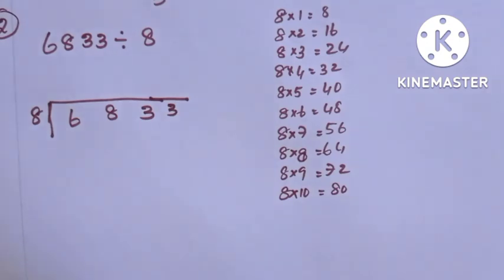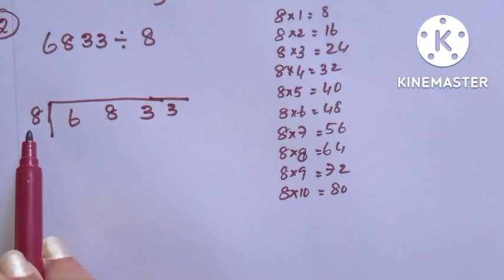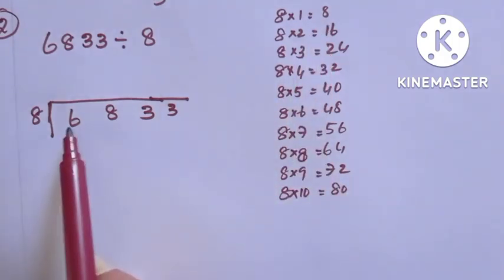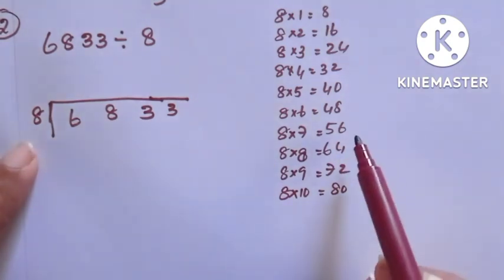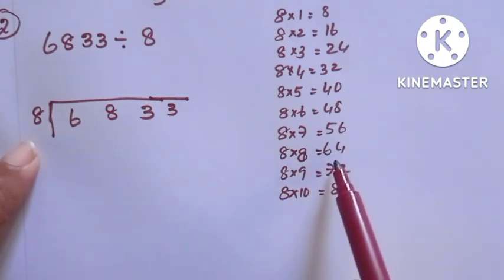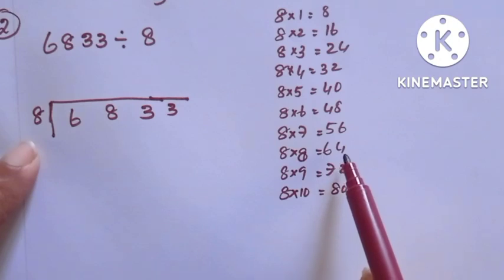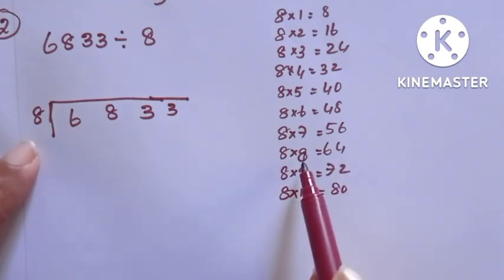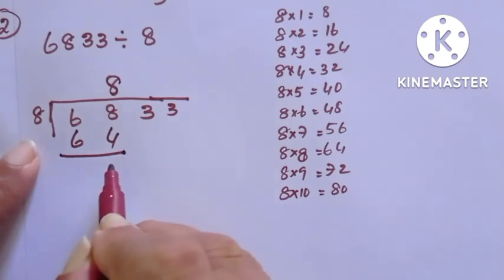Next problem: 6833 divided by 8. The leftmost digit is 6, but 6 is less than 8 and is not in the 8 times table, so we take the next digit as well. The two digits together are 68. How many times does 68 go in the 8 times table? 72 is greater than 68, so we take 64 — the number less than 68. 8 eights are 64, so we write 8 in the quotient. We write 64 below and subtract to get 4.